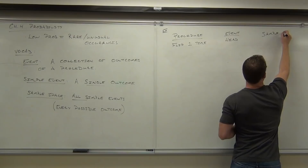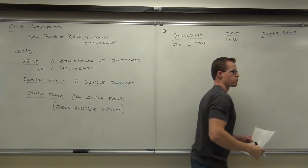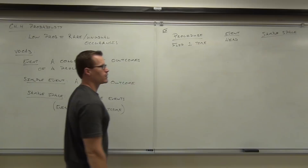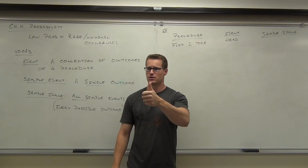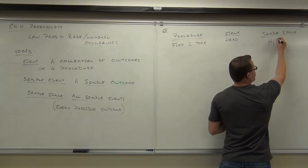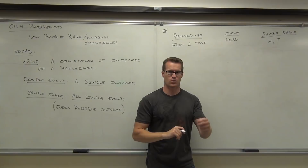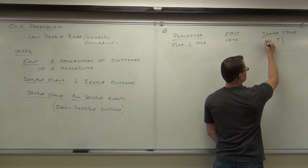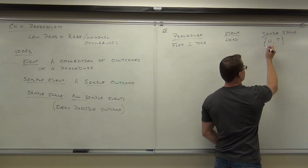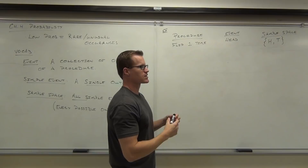Our sample space includes every possible outcome when you do your procedure. Our procedure is flipping the coin one time. What could you possibly get? You either get a head or you get a tail — that's what our sample space is. Can you get anything else besides a head or a tail? No. We put curly brackets around it. Our sample space is a collection of simple events.